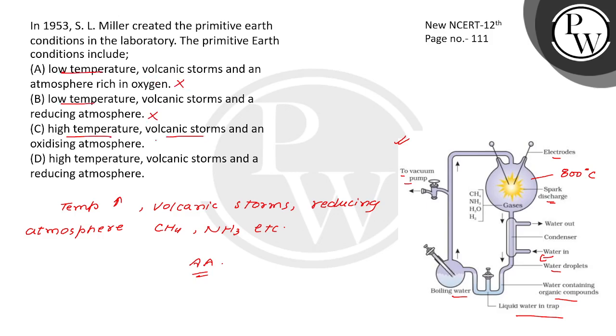High temperature, volcanic storms, and oxidizing atmosphere with free molecular oxygen? No, O2 was not present. So this is high temperature, volcanic storms, and reducing atmosphere. That is, reducing atmosphere. This is the correct option, option B.